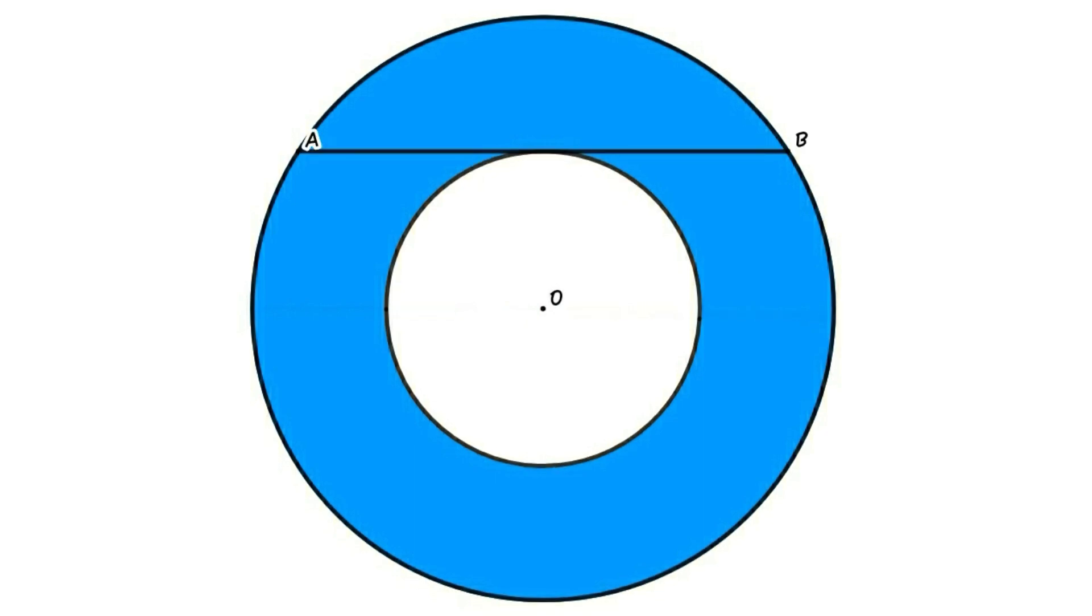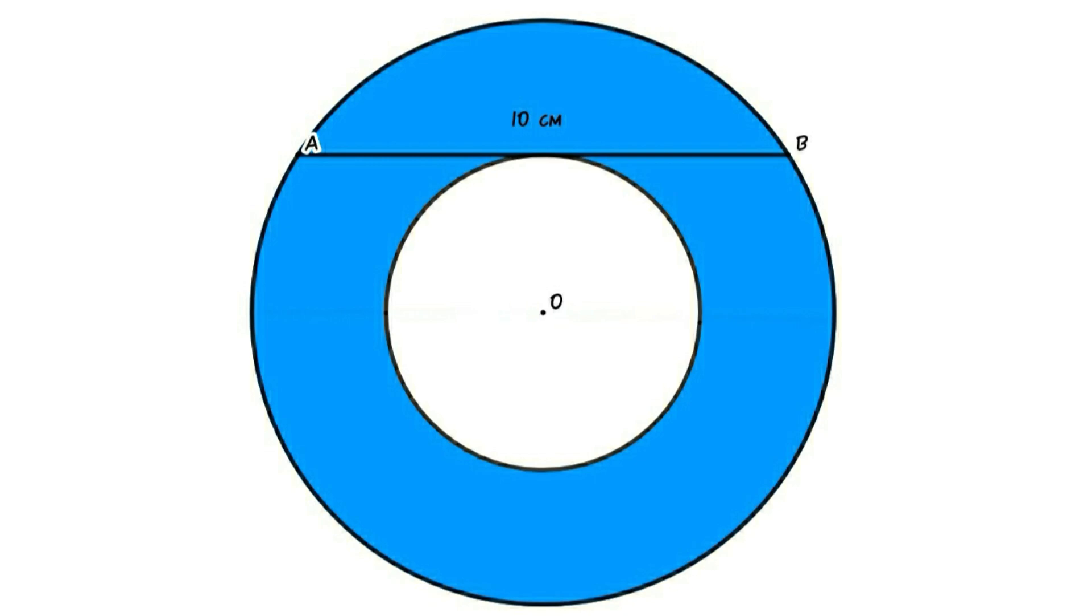Draw a circle. Then remove a smaller circle from its center. The center of both circles is at O. Also, AB is a chord which is tangential to the smaller circle and measures 10 cm in length. Find the area of the blue shaded region.